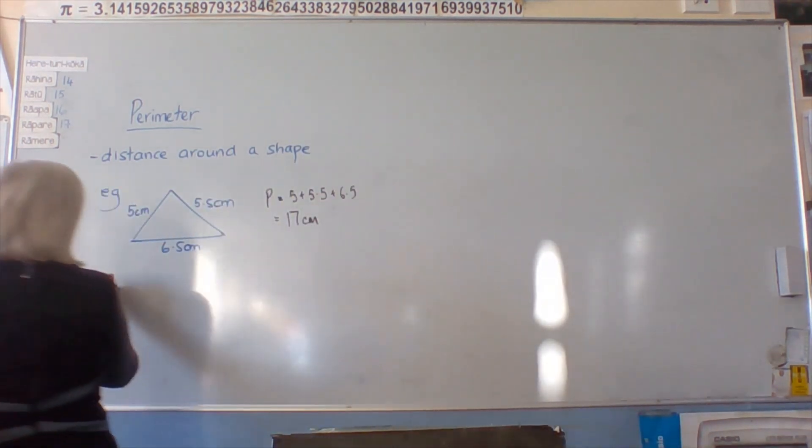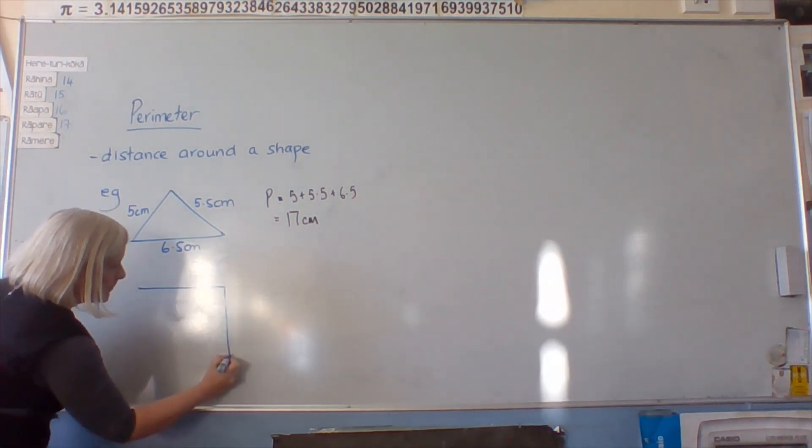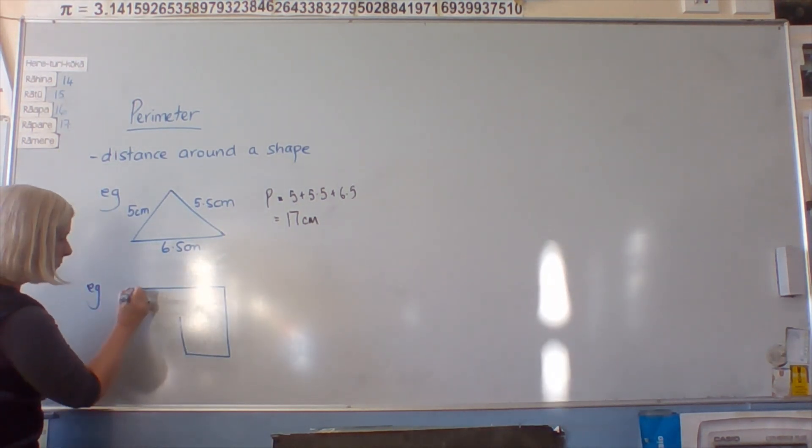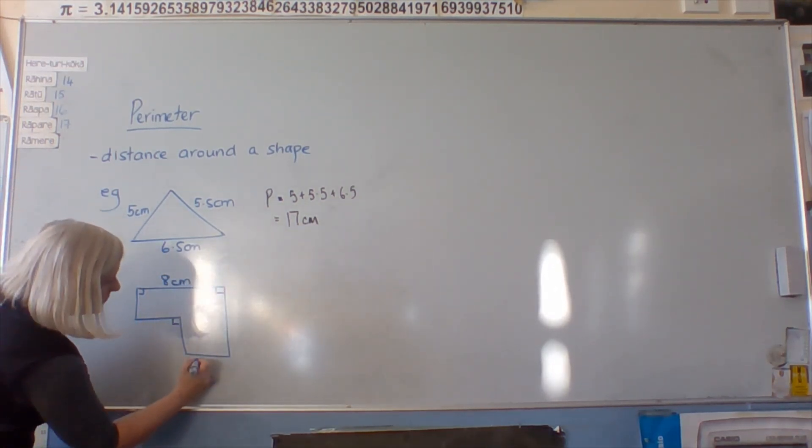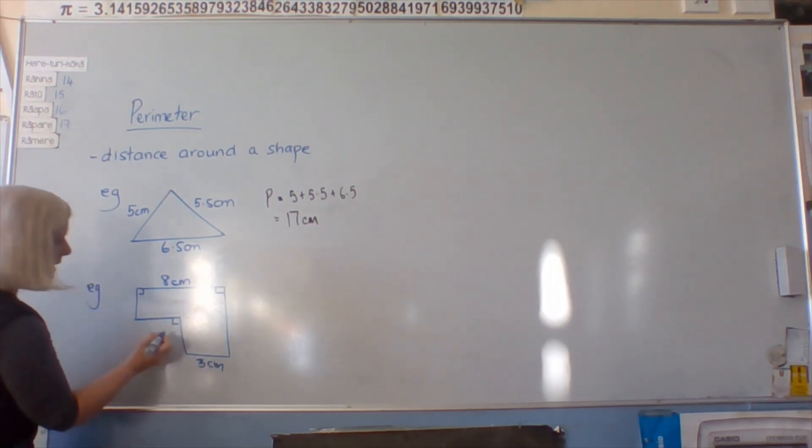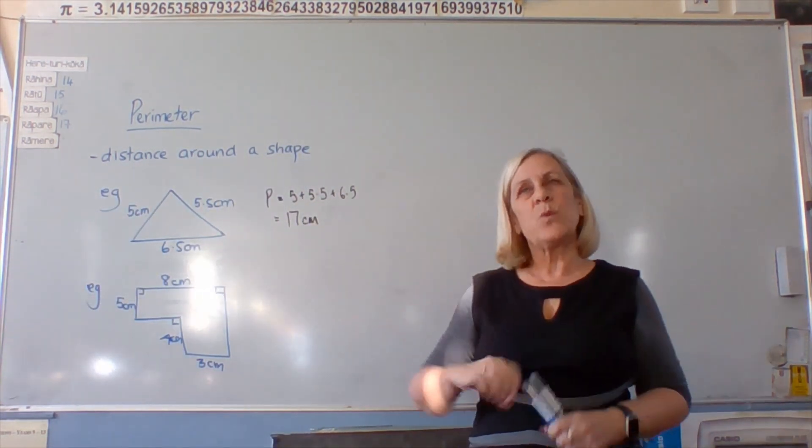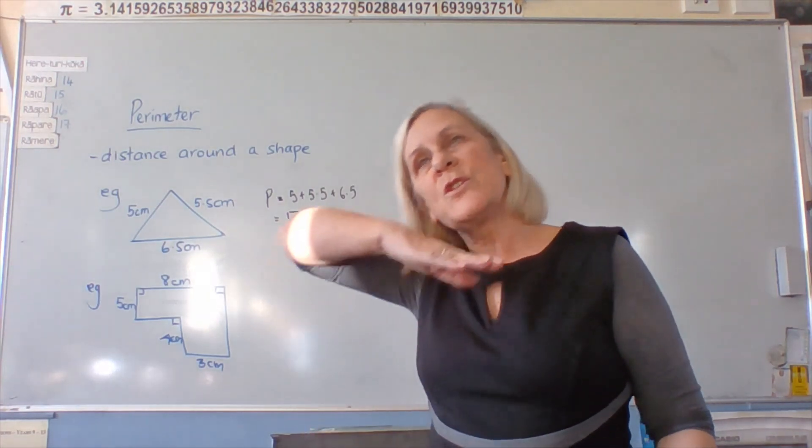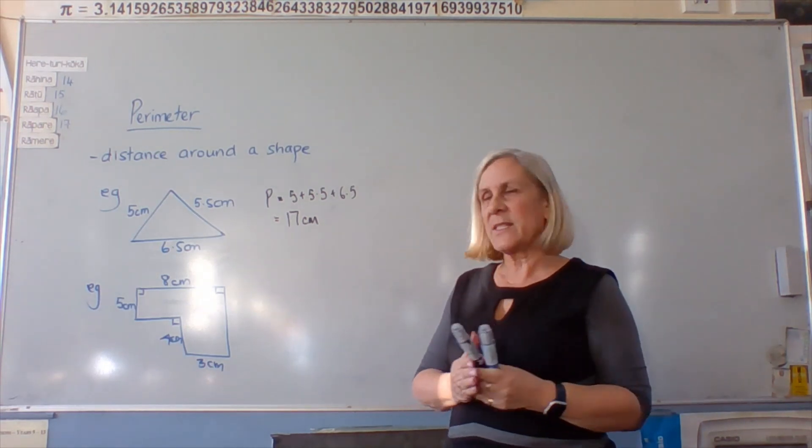So a more complicated question would look something like this. All right, so if we just added up those four numbers, we wouldn't have the perimeter because we haven't gone right around the shape. We need to find the lengths that are missing.